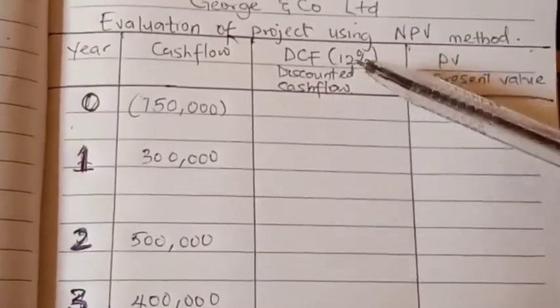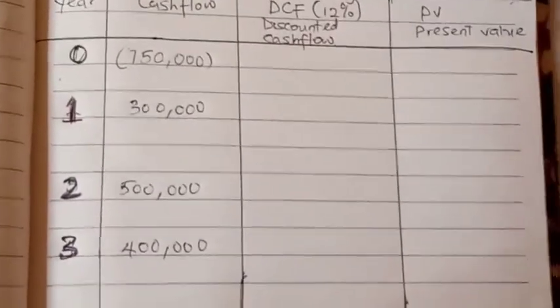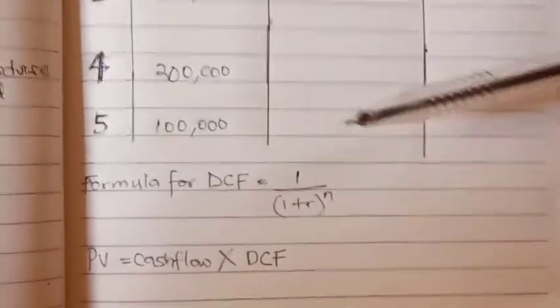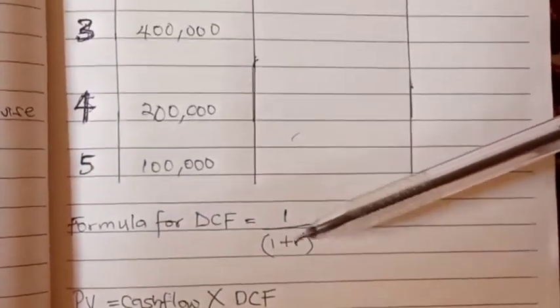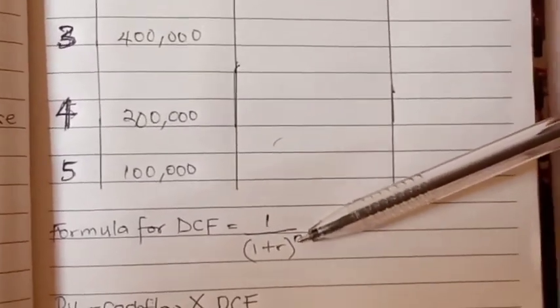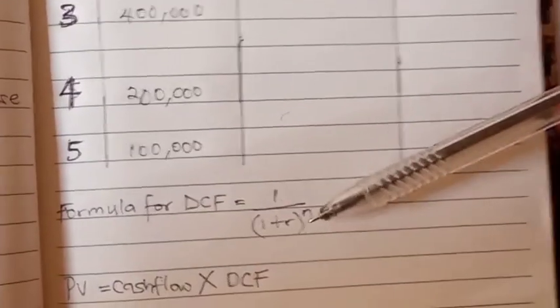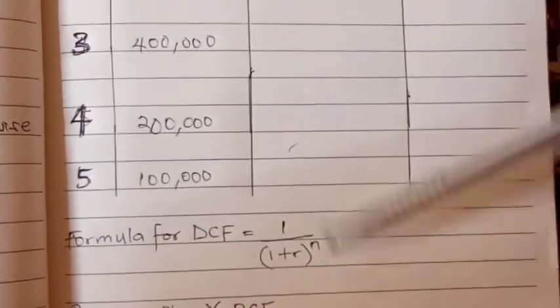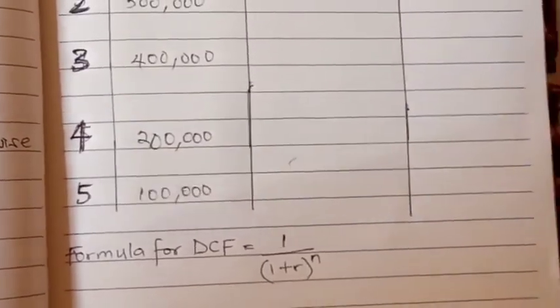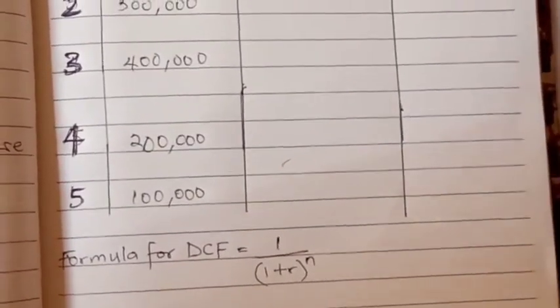How do we calculate this? The formula for discounted cash flow is written below here: 1 over (1 plus the rate) close bracket raised to n. That is, n is the year. So if we are in year 1, the n will be 1. If we are in year 5, n will be 5.